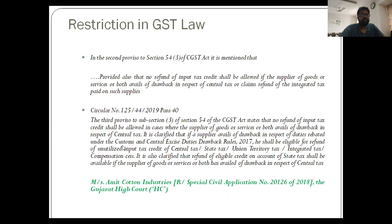Section 54(3) states: 'No refund of input tax credit shall be allowed if the supplier of goods or services or both avails of drawback in respect of central taxes or claims refund of the integrated taxes paid on such supplies.' This means refund of unutilized ITC is allowed for zero-rated supplies, provided that refund will not be allowed if the supplier has availed drawback benefits.